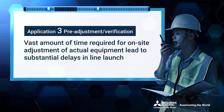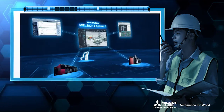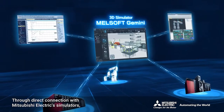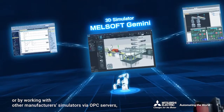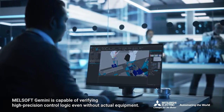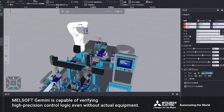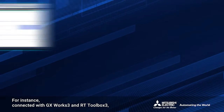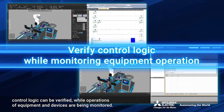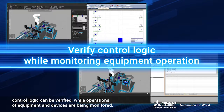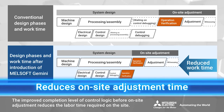A vast amount of time required for on-site adjustment of actual equipment caused substantial delays in line launch. Through direct connection with Mitsubishi Electric's simulators, or by working with other manufacturers' simulators via OPC servers, MelSoft Gemini is capable of verifying high-precision control logic even without actual equipment. For instance, connected with GX Works 3 and RT Toolbox 3, control logic can be verified while operations of equipment and devices are being monitored. The improved completion level of control logic before on-site adjustment reduces the labor time required on-site.